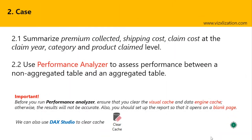Now let's go to the case — two tasks. The first one: we need to summarize premium collected, shipping cost, and claim costs at the claim year, category, and product claim level. We're going to use a powerful feature within Power BI Desktop called Power Query.